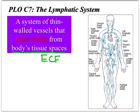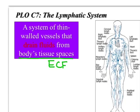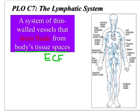The lymphatic system is defined as a system of thin-walled vessels that drain fluids from the body's tissue spaces — the space in between the capillary beds and the lymph capillaries, which we call ECF, standing for extracellular fluid.